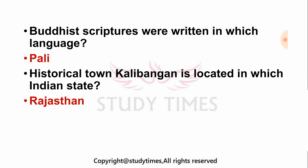Both these scriptures were written in Vajsh language. Answer is Pali. Next question is: historical town Kalibangan is located in which Indian state? Answer is Rajasthan.